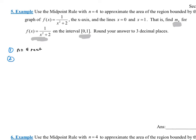The second part is to determine the width of every single one of those rectangles. That's delta x, which is the right endpoint — 1 — minus the left endpoint — 0 — divided by the number of rectangles, which is 4. So this gives us 1/4, which is 0.25 — that's the width of each one of those rectangles.